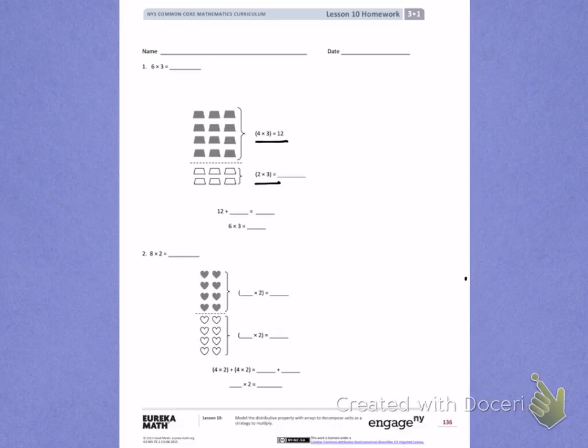I'm going to skip count by 3's to help me find this answer. In the first row, I have 3. Continuing to count, I have 6. So 2 times 3 equals 6.